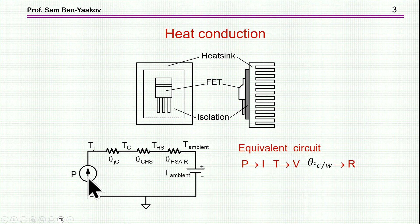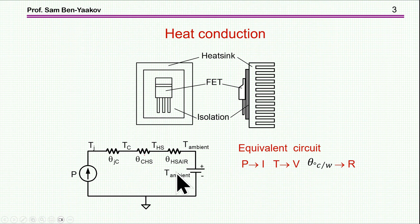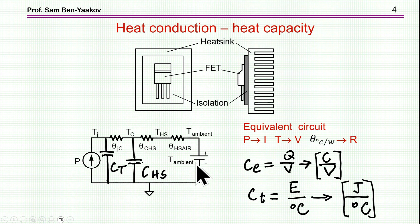What we see here is we have the power coming into the system. This will be the junction temperature. This is the thermal resistance within the transistor between the junction and case. Then this is the thermal pad between the case and the heatsink. And this is the heatsink between the heatsink and the ambient, where the ambient is represented by a voltage source. This equivalent circuit is suitable for the static case.